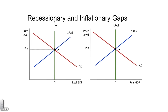Let's take a look at recessionary gap first. So if the aggregate demand curve is comprised of C, I, G, and NX, what might cause a recession? A recession is generally a result of a reduction in demand by one of these components. So it might be that consumers are buying less, or businesses aren't expanding on plant and equipment, or maybe foreigners aren't buying American products like they once did. One way or the other, we know that if there is a reduction in demand in the aggregate or total U.S. economy, our demand curve will shift to the left.